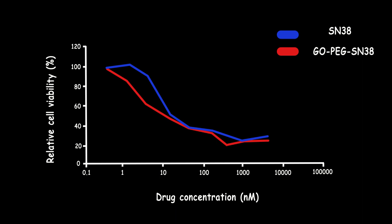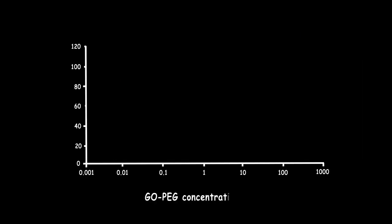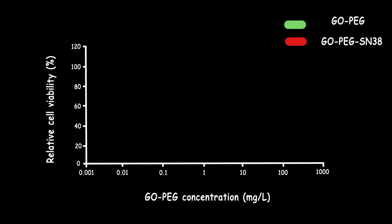However, the biomaterial should not be toxic and should be safe at the dose concentration. This is the comparison between the toxicity of pegylated graphene oxide without and with the drug, which shows that this drug delivery system is not toxic to the cells.